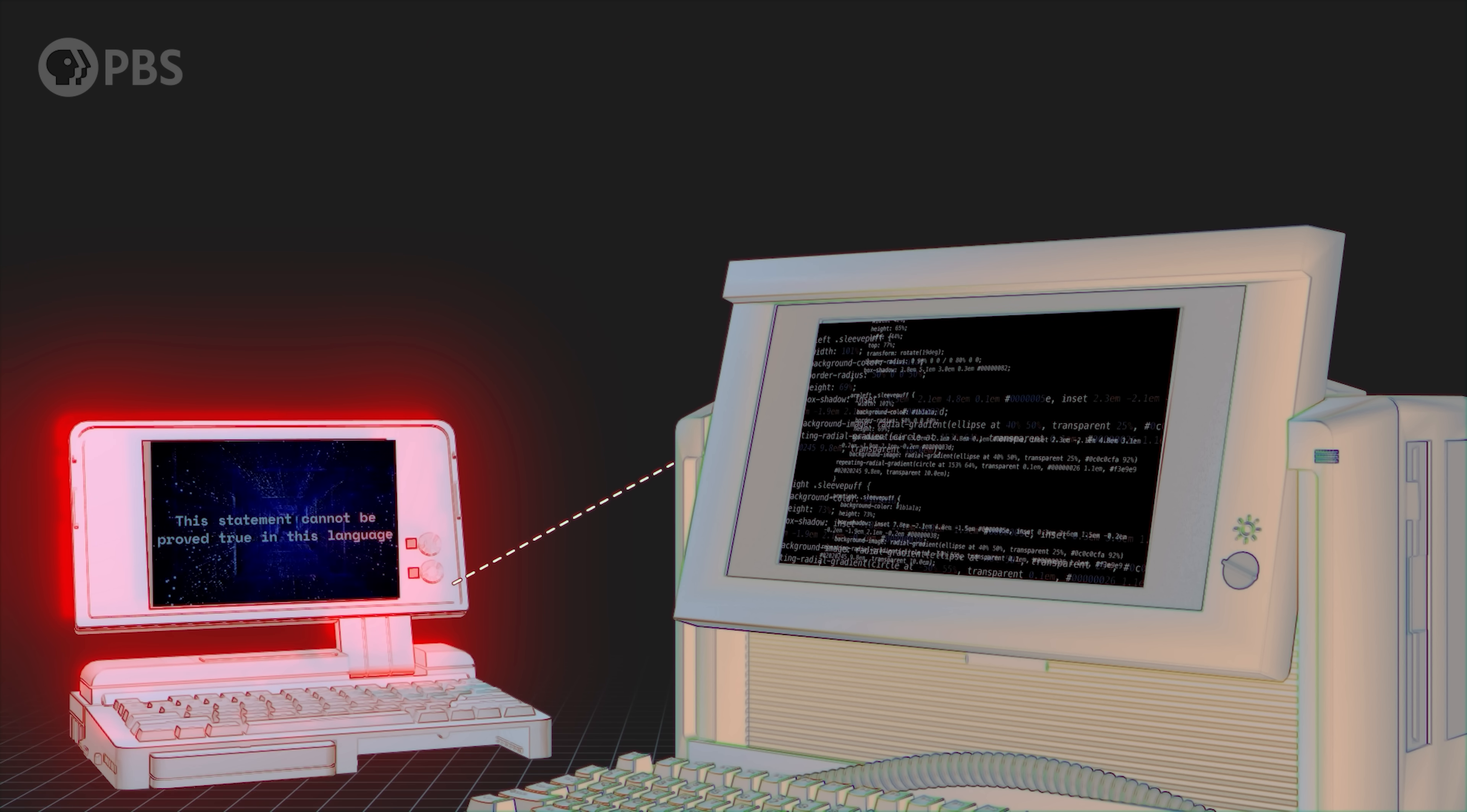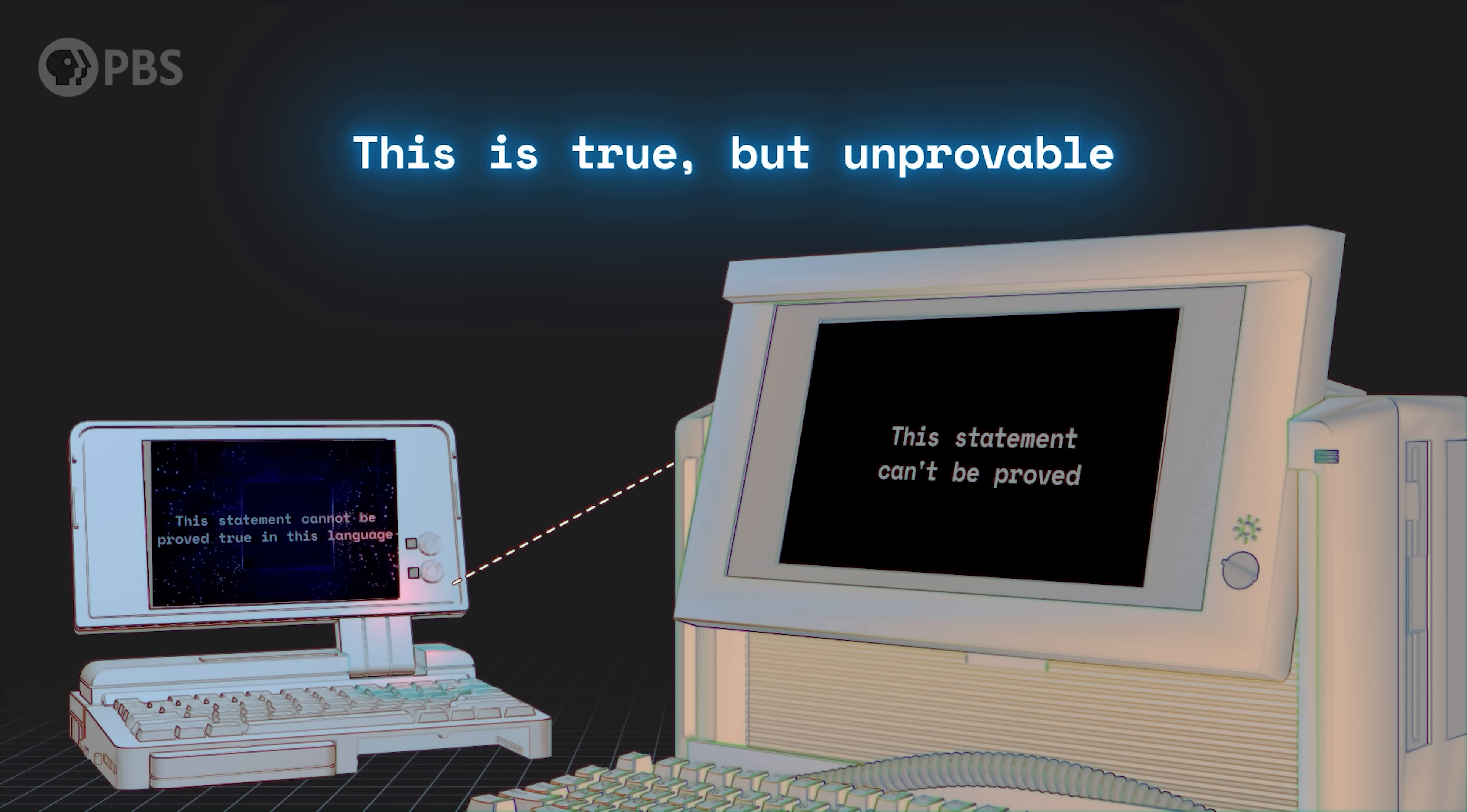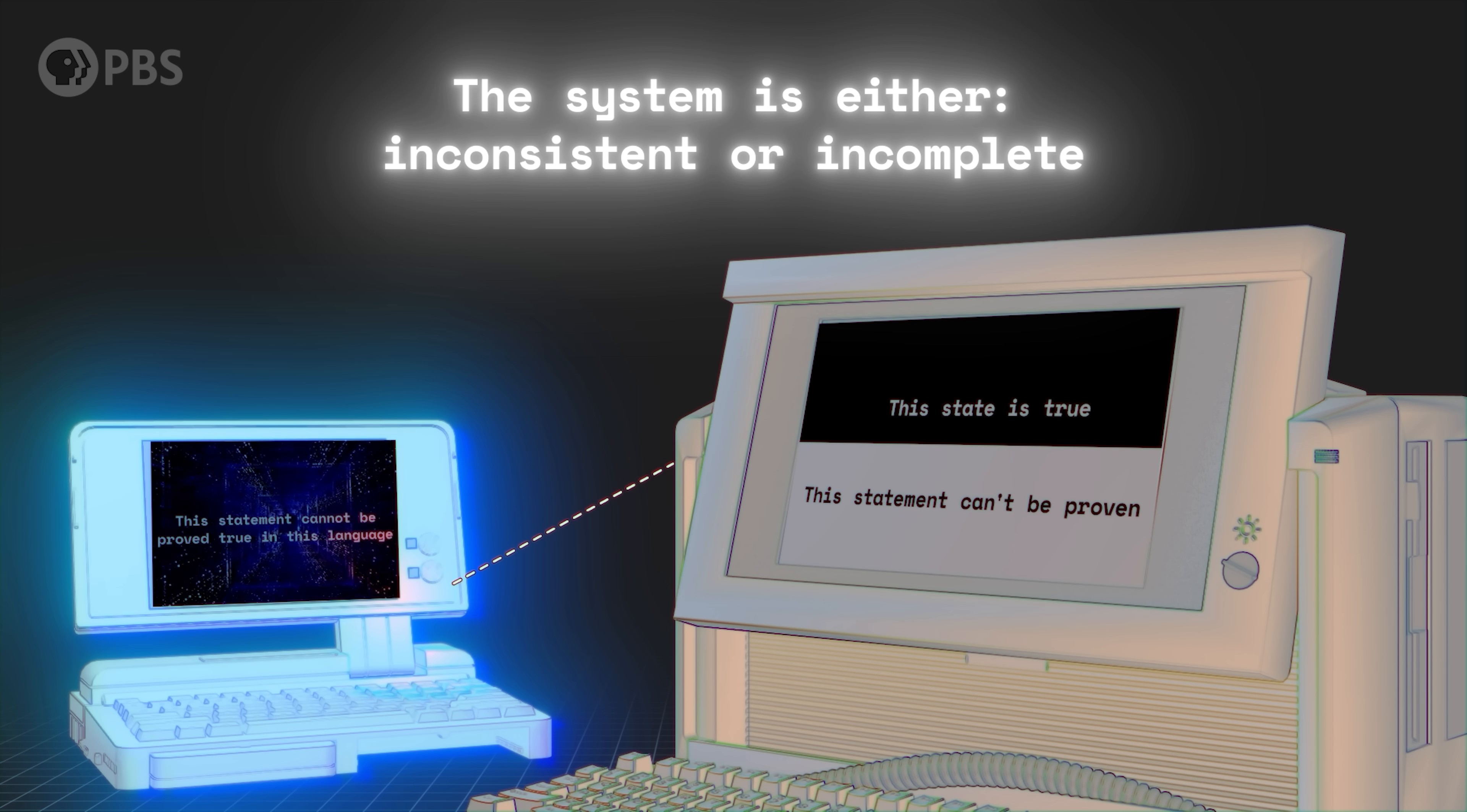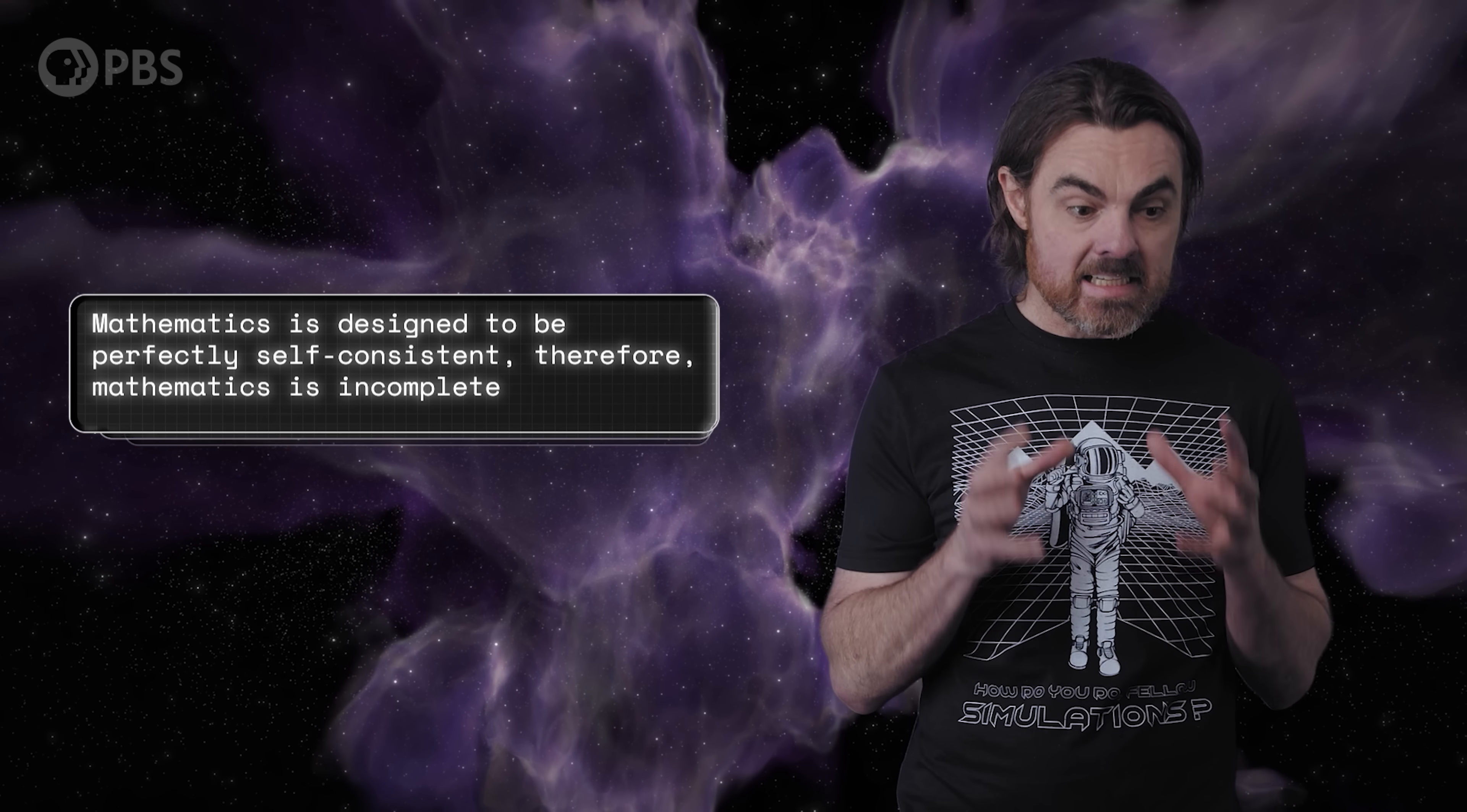Now imagine there's an algorithm that can search through all combinations of expressions in the natural language in question until it successfully finds the one that proves this statement true. That very act would render the statement false, thereby showing that the system is inconsistent. But if the algorithm couldn't find an expression, it would demonstrate that the statement, which is that this statement can't be proved, is true but unprovable. So either the system is inconsistent or contains true but unprovable statements.